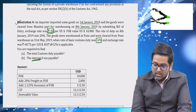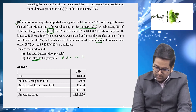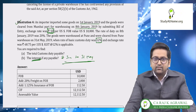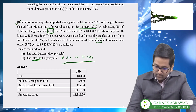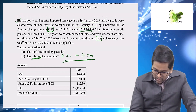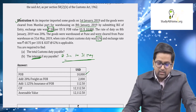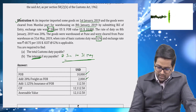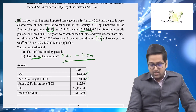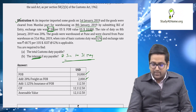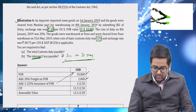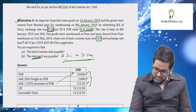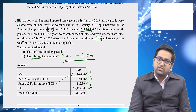Interest will be charged for the period from 8th January to 31st May. Now let's start the calculation. FOB value = US $10,000. Freight is not given, so we take 20 percent of FOB = $2,000. Insurance is not given, so we take 1.125 percent of FOB = $112.50. Adding all three gives us the CIF value, which equals the assessable value.